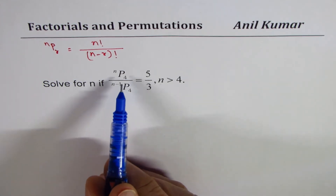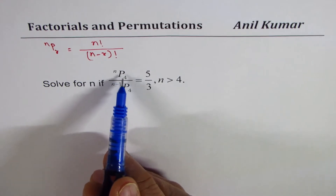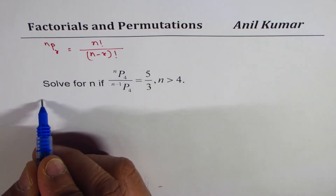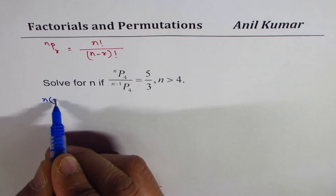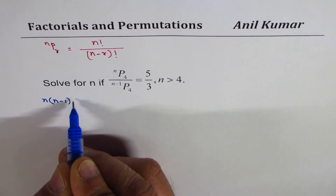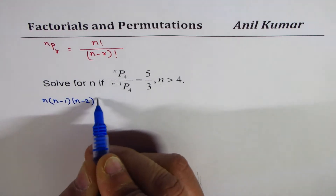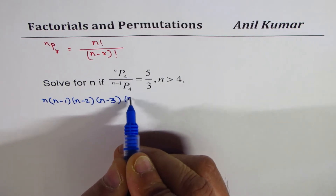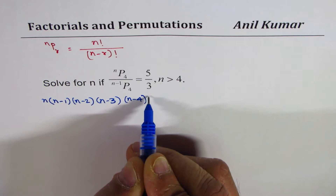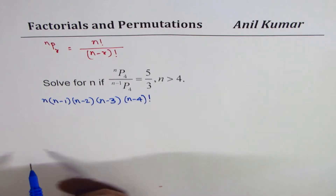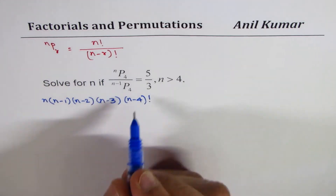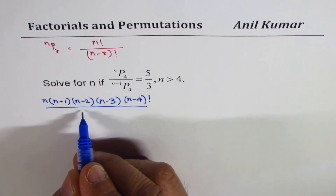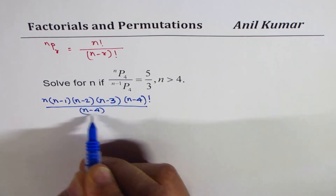Let's begin by expanding numerator and denominator. nP4 really means n times (n minus 1) times (n minus 2) times (n minus 3) times (n minus 4). At this stage we should stop and write factorials, since we will get the same term in the denominator — divided by (n minus 4) factorial — so that will eventually cancel off.